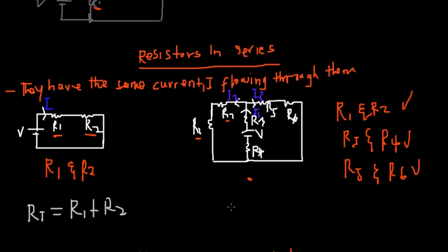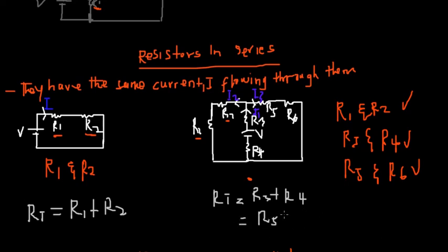For the second example, R1 and R2 are also in series, so the total resistance equals R1 plus R2. The same approach applies for R3 and R4: total resistance equals R3 plus R4. And for R5 and R6: total resistance equals R5 plus R6. That is how you calculate effective or total resistance in series.